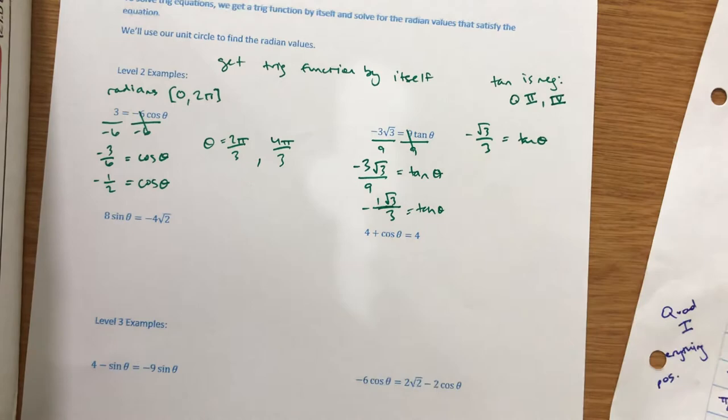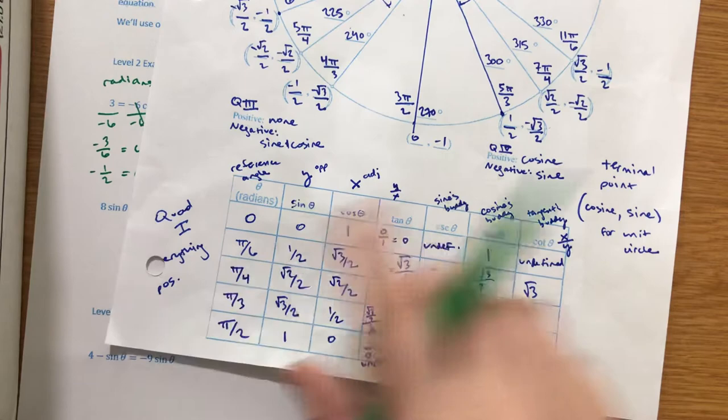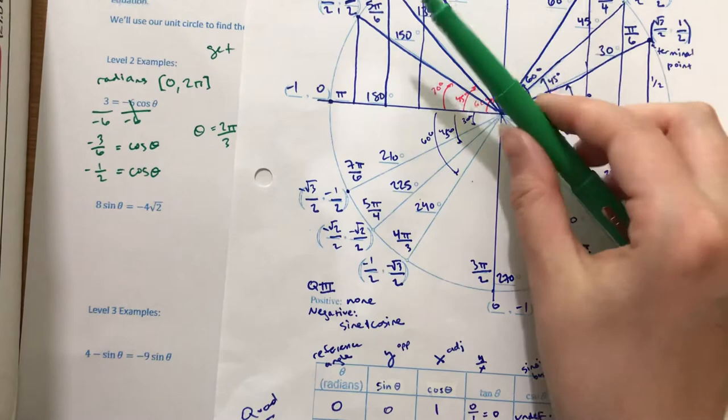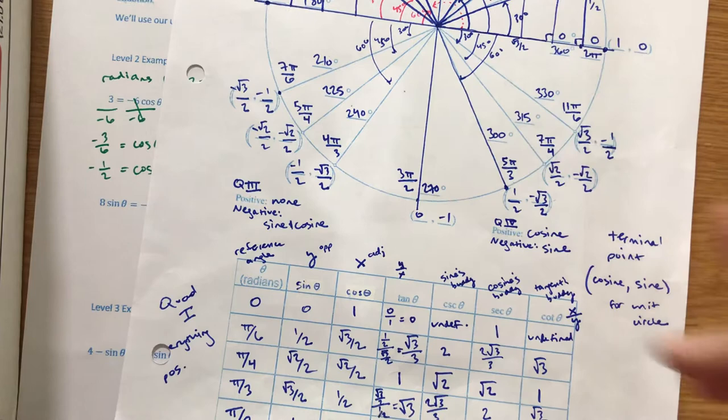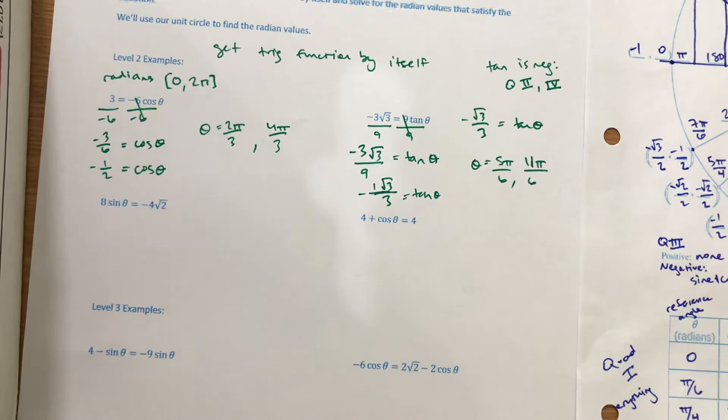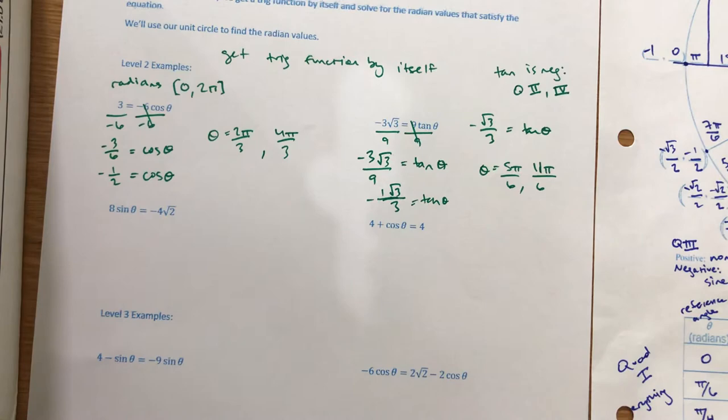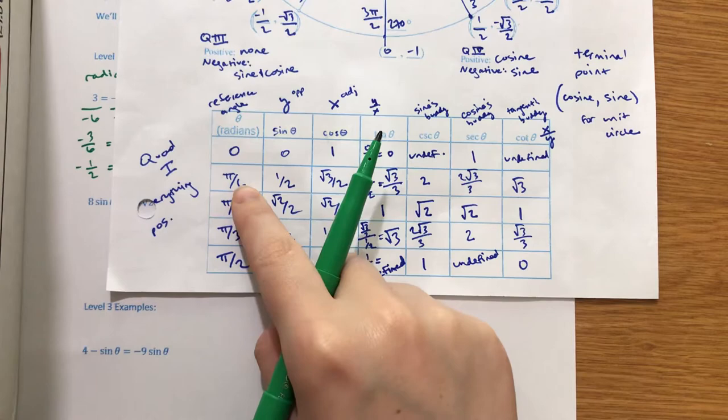We need the pi over 6 values from quadrants 2 and 4. In quadrant 2 we get 5 pi over 6, so theta equals 5 pi over 6. And in quadrant 4 it's 11 pi over 6. Tangent is the trickiest one because you can't just look at the circle — you have to think about when tangent is negative, which is quadrants 2 and 4, then pull the pi over 6 values from those quadrants.